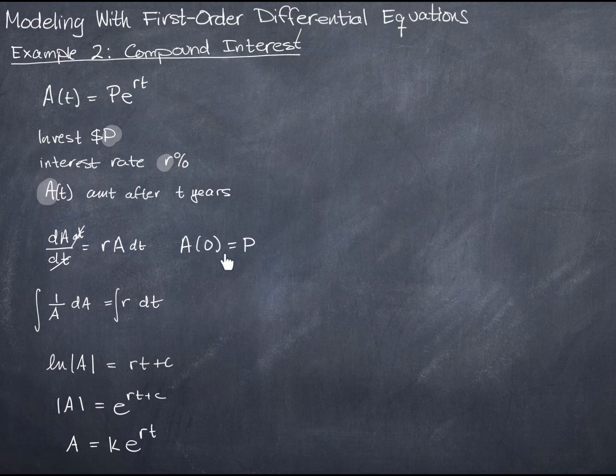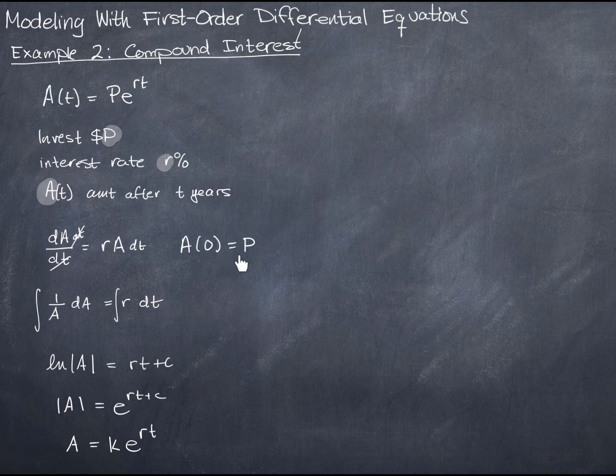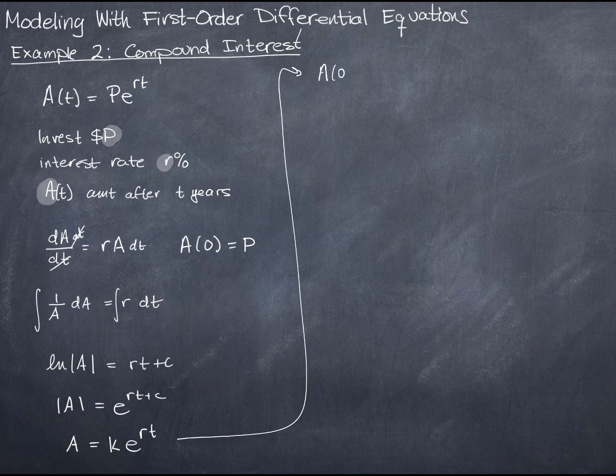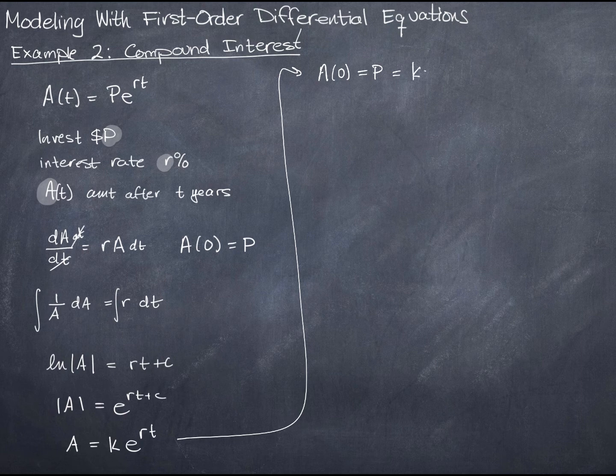Now what I'm going to do is apply the initial conditions here. I've said that the amount at time zero is just the amount that you initially invest in the account. So let's put this up here. Here, A of zero, which happens to be P, is going to be equal to k times e to the r times zero.